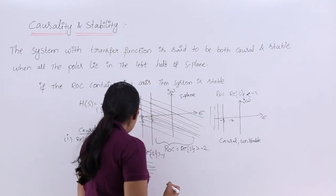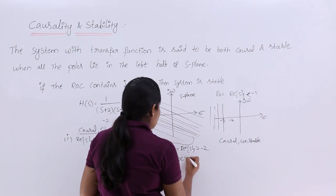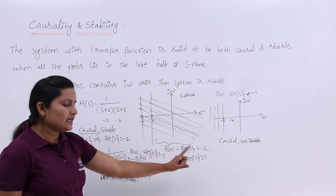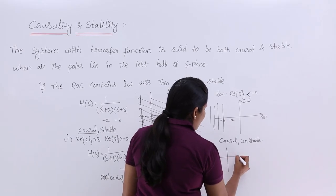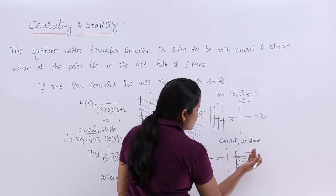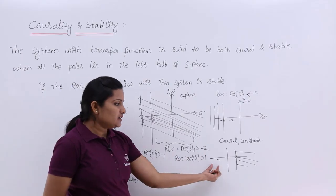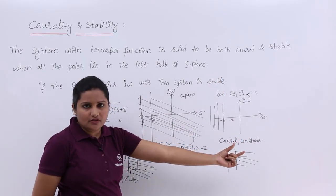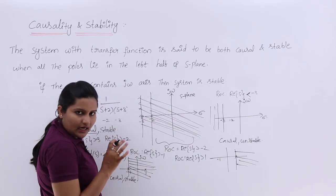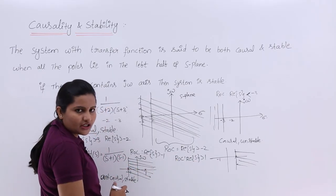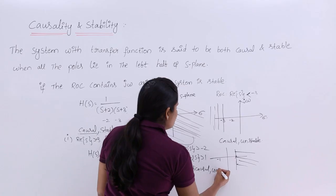For the same transfer function H(S) = 1/[(S+1)(S-1)], if the ROC is instead Re(S) > 1, the same poles are at -1 and +1, but the ROC Re(S) > 1 does not include the jω axis. So the system is not stable — it is unstable. And since one pole lies in the right half of the S-plane, the system is anti-causal. Therefore this system is anti-causal and unstable.